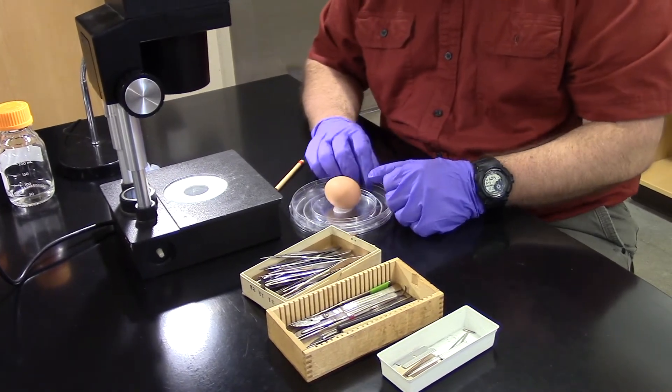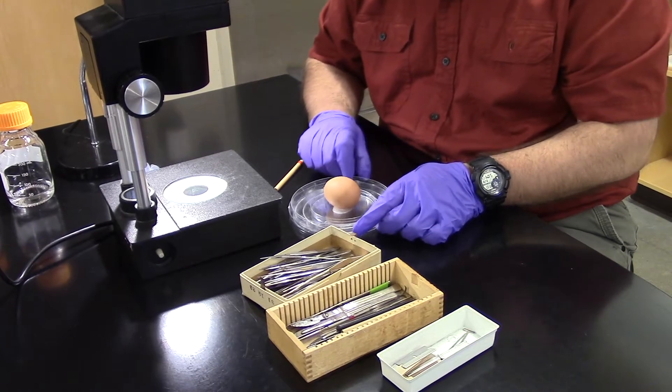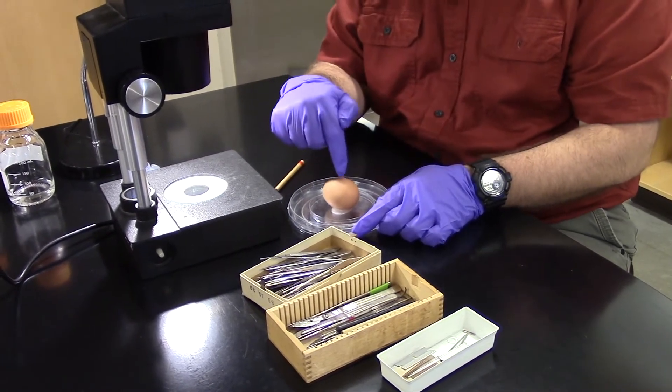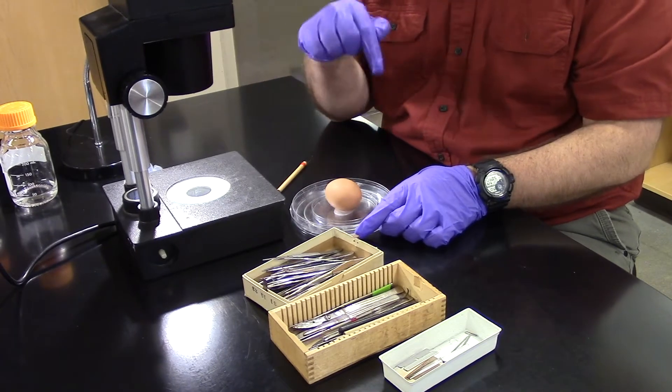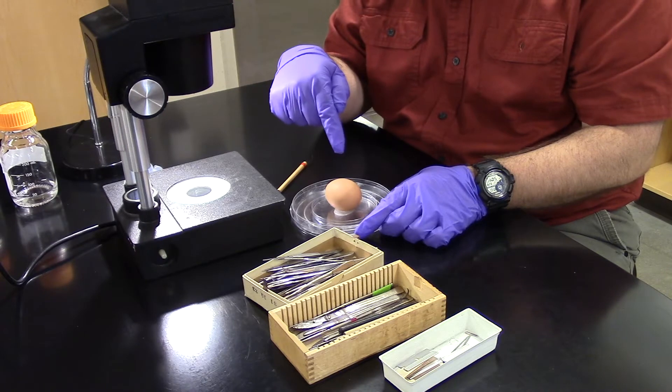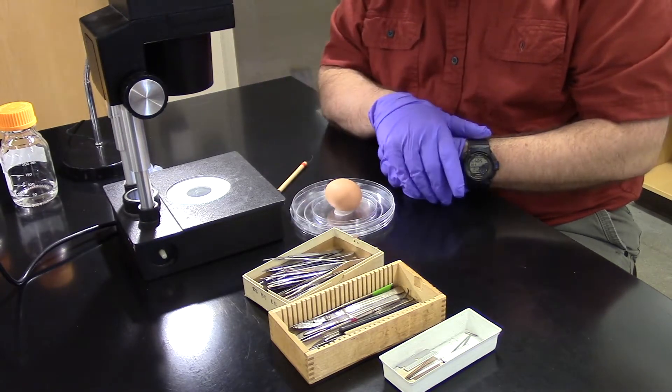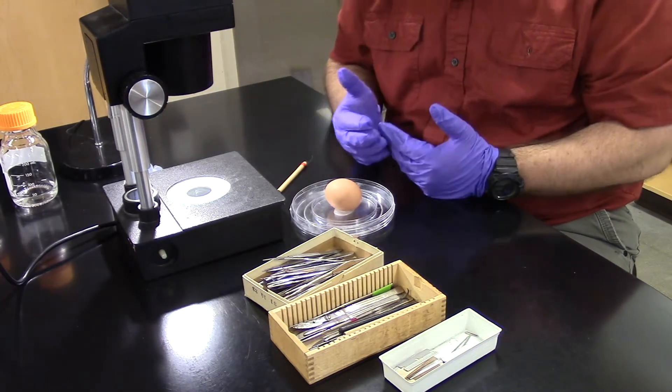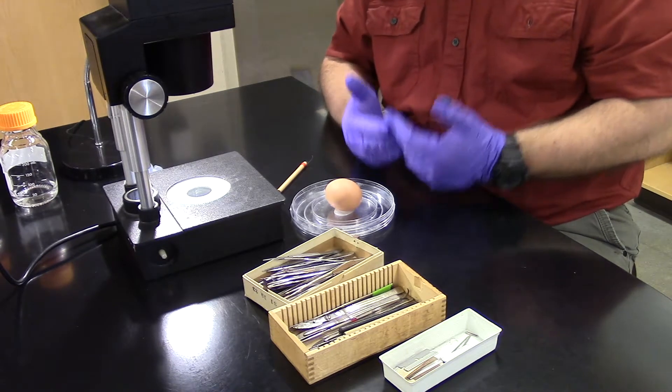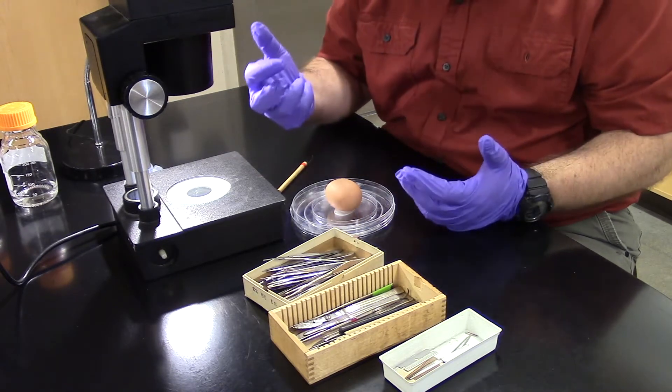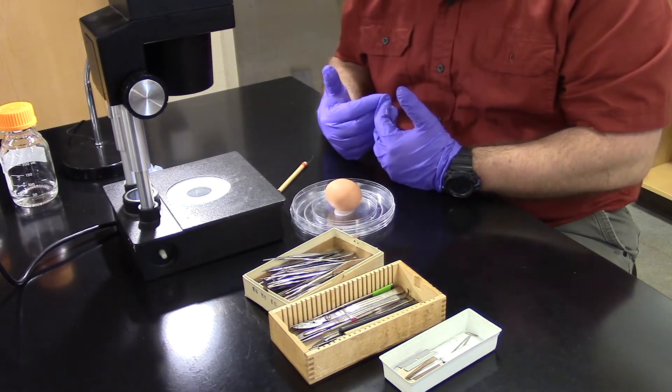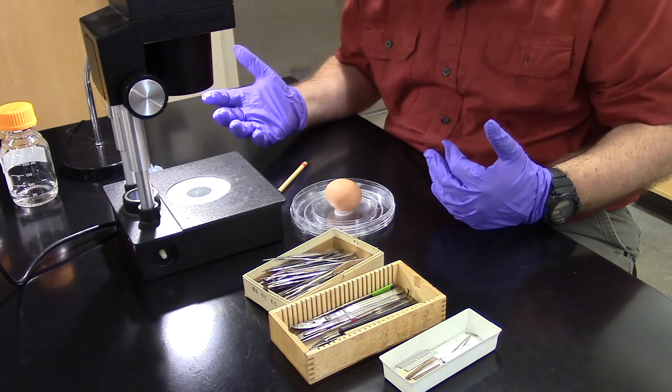Now what we're going to do is make a window. This is called windowing the egg. This allows us to see through this hard, opaque shell and look into the embryo. We're going to remove the calcified shell so that we can see what's inside the egg. This allows us to keep the embryo alive while we do the experiment. In case we as developmental biologists wanted to study the egg, we could then put it back in the incubator and watch it for the next 21 days to see what happened.